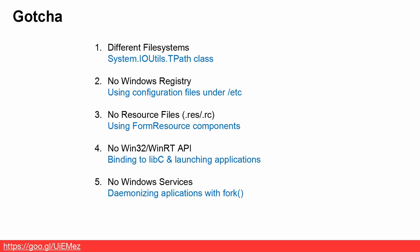Number four: there is no Windows 32 API, no WinRT API. So we're going to take a look at the libc library instead as an alternative, and we'll do that by launching applications using calls through the libc library.